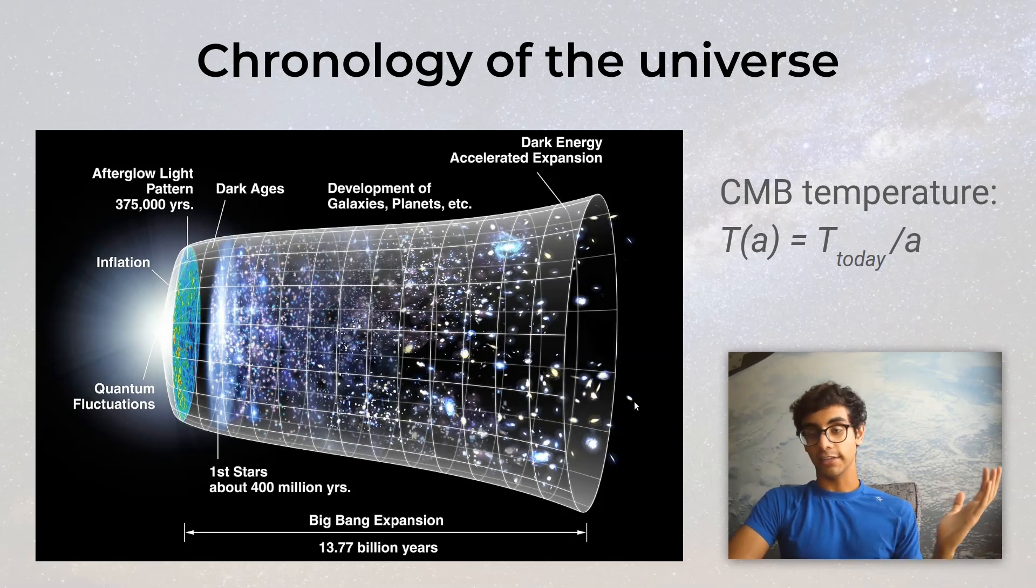Since then, the universe has expanded a whole bunch more. Because of cosmological redshift, all that light has correspondingly been redshifted. Incredibly, the math works out that what used to be a black body spectrum at 3000 Kelvin is now still a black body spectrum, but just at a much colder temperature. What this means is that radiation is still flying around the universe, and it still looks like a black body spectrum, but now it's peaked in the microwave band with an effective temperature of just three degrees above absolute zero.